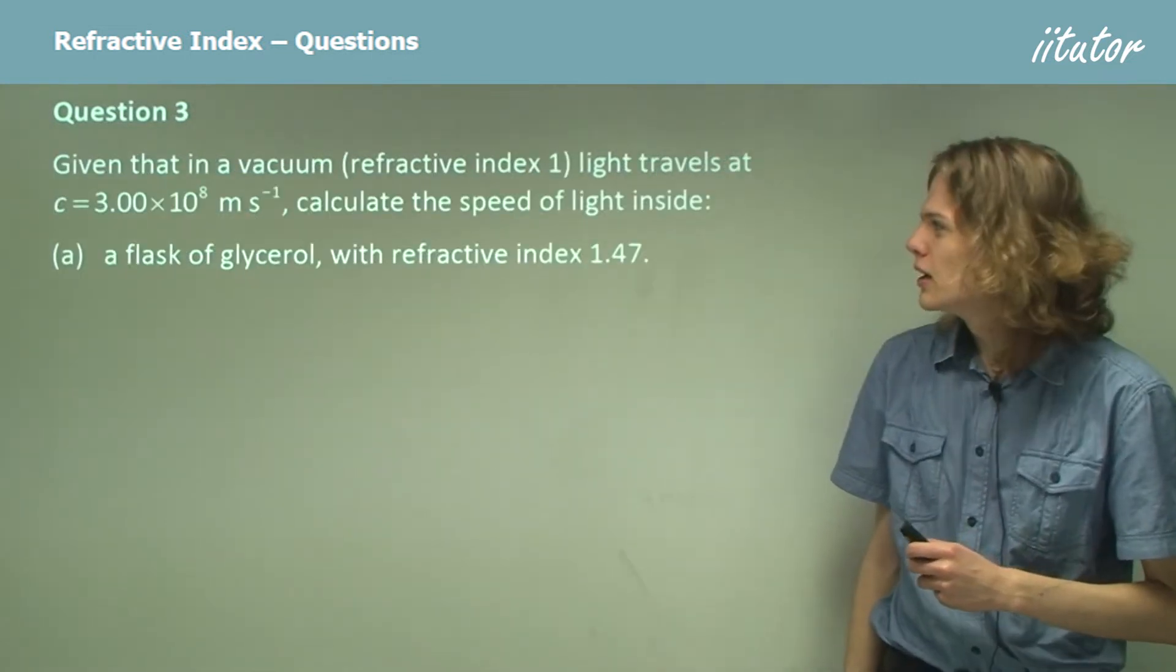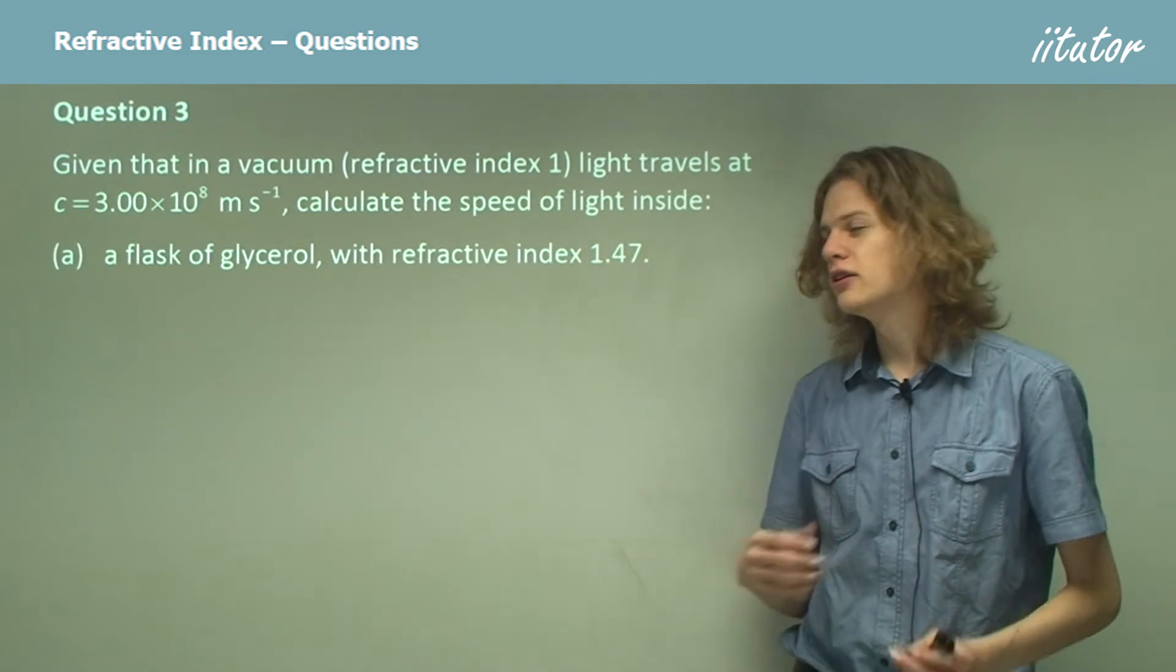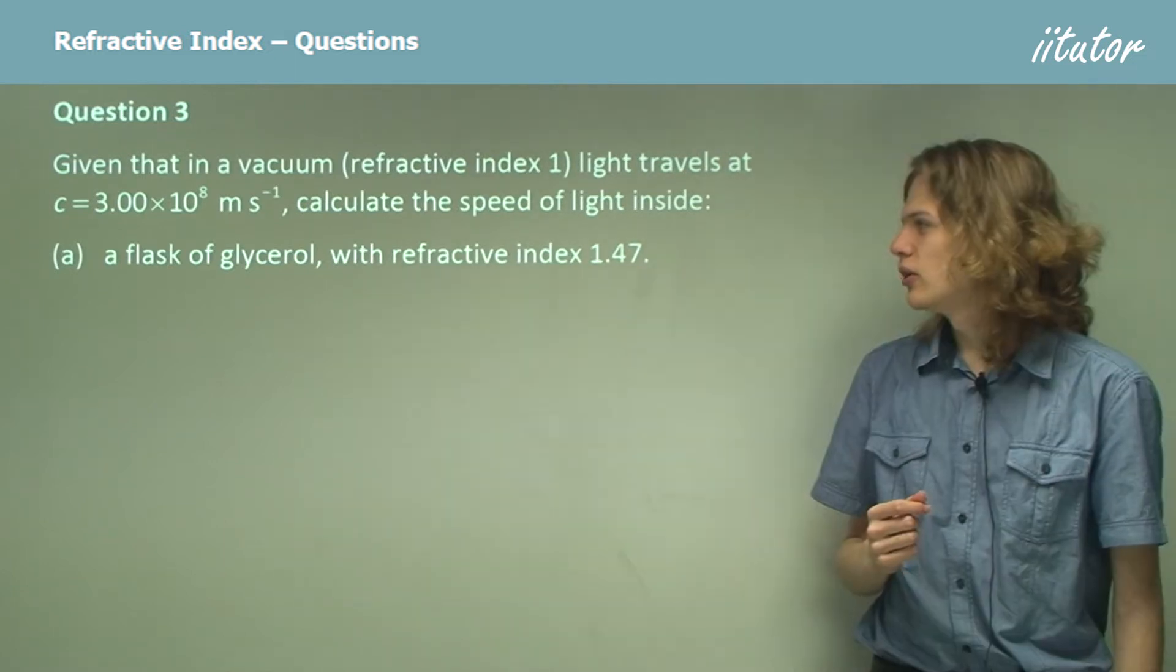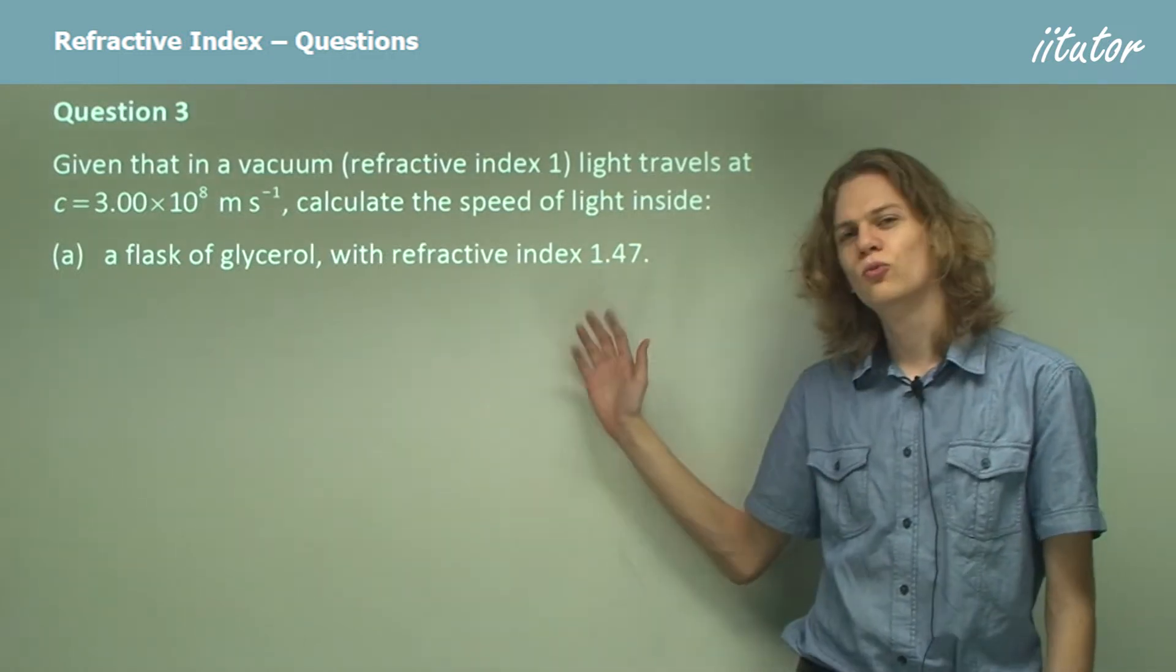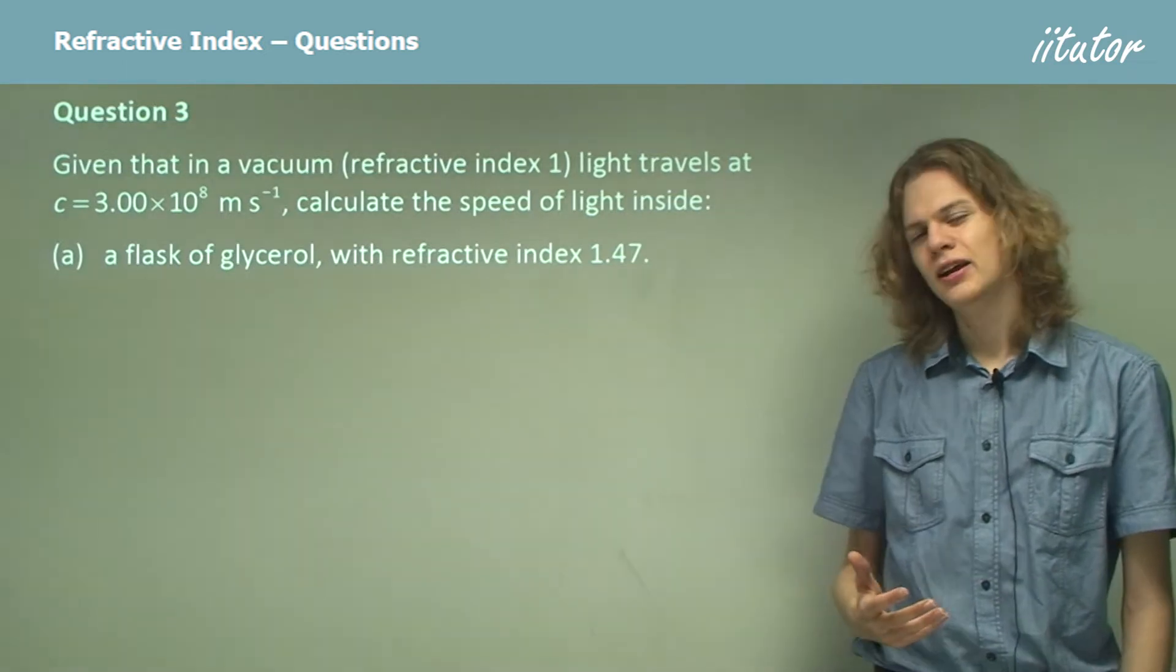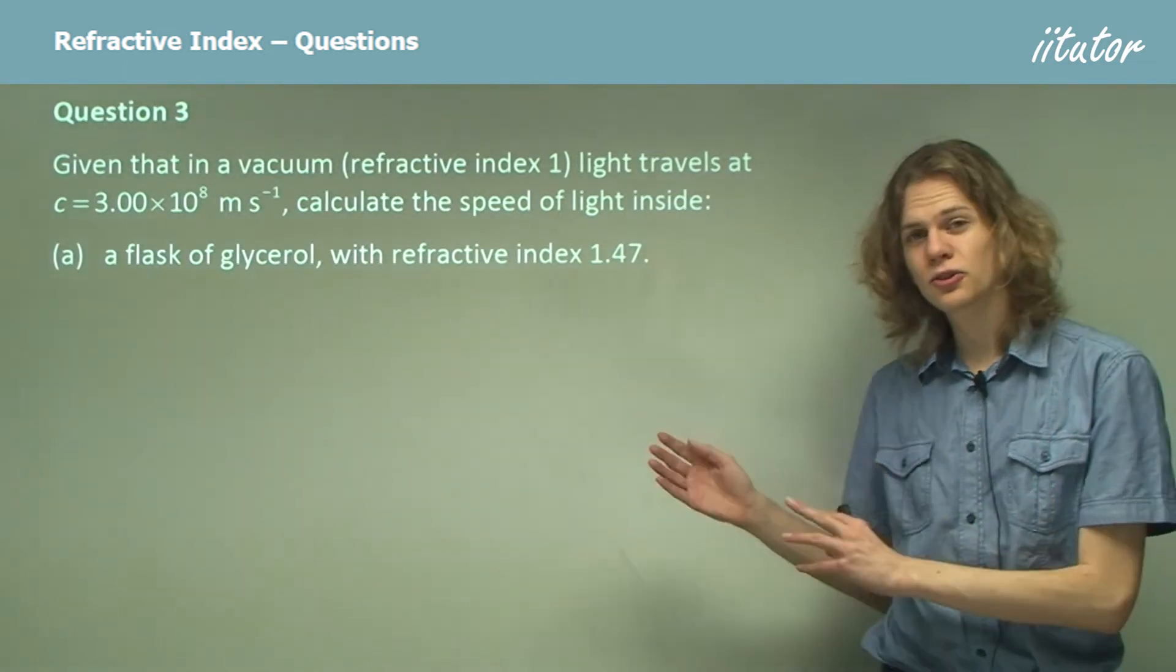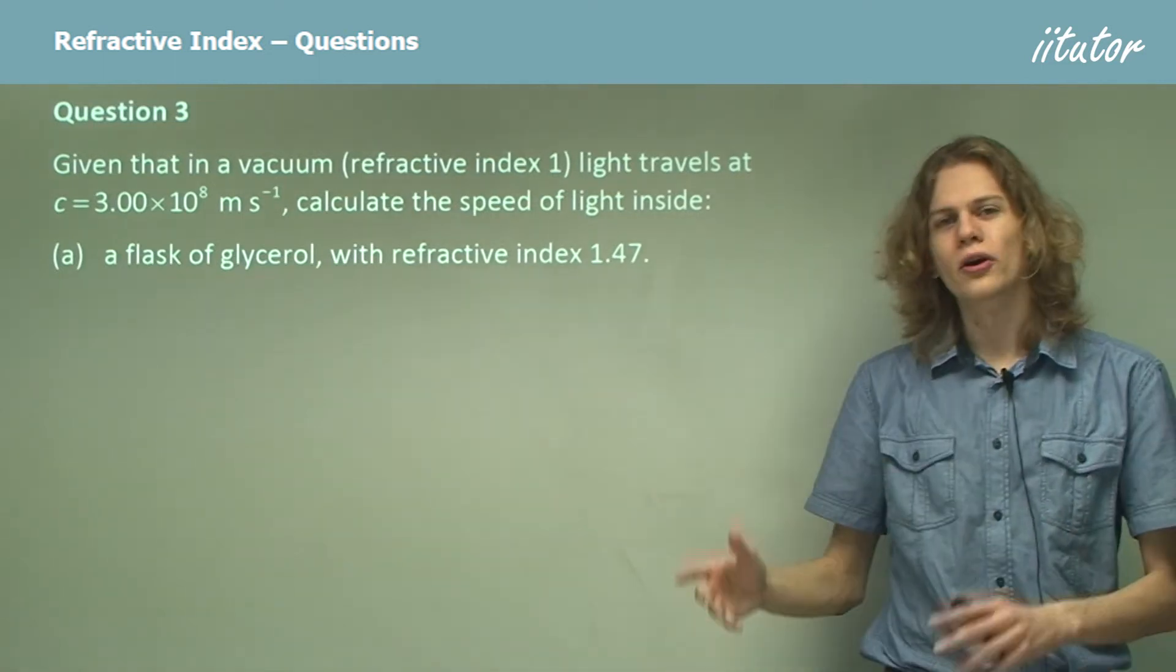Question three. Given that in a vacuum, light travels at this speed, calculate the speed of light inside a flask of glycerol. Glycerol is a viscous transparent liquid. It has a refractive index of 1.47. So what's our equation to figure out the speed of light inside it? It's the speed of light inside the glycerol equals C, our number here, over the refractive index.